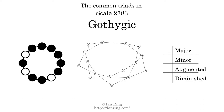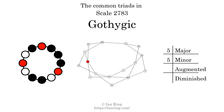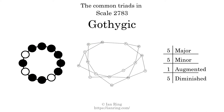The diagram in the center is a graph of parsimonious voice leading between triads. There are 5 major triads. There are 5 minor triads.